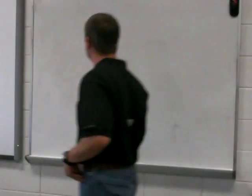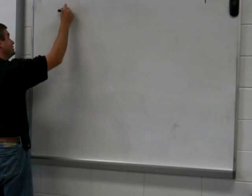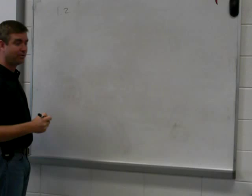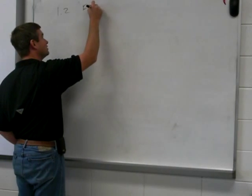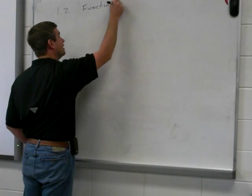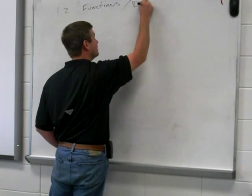Alright, here we go. This is Math 1. We're in the red Math 1 textbook. We're talking about sections 1.2 and we're also going to talk about 1.3 today. 1.2 is functions, and also we're going to talk about domain and range.